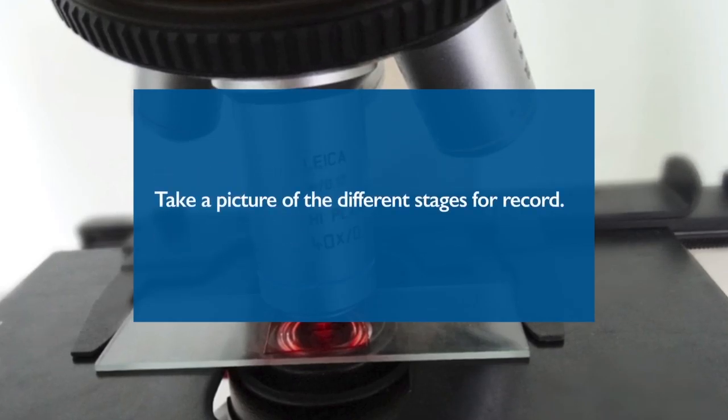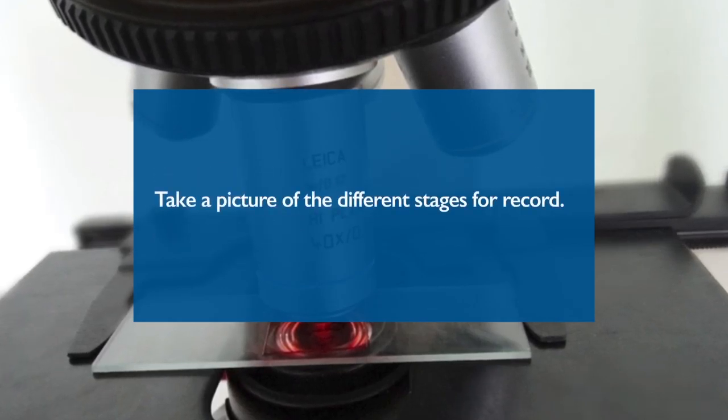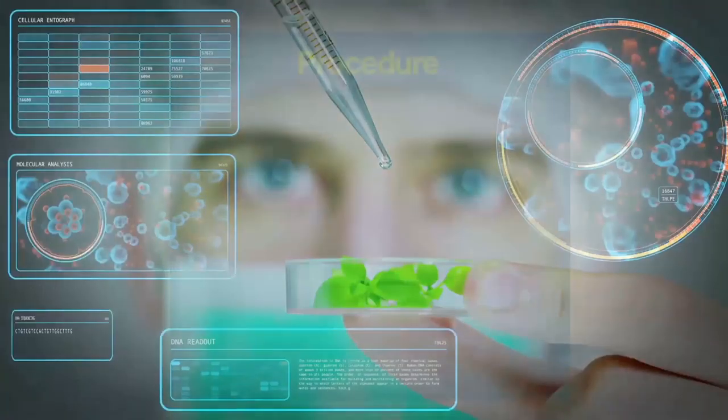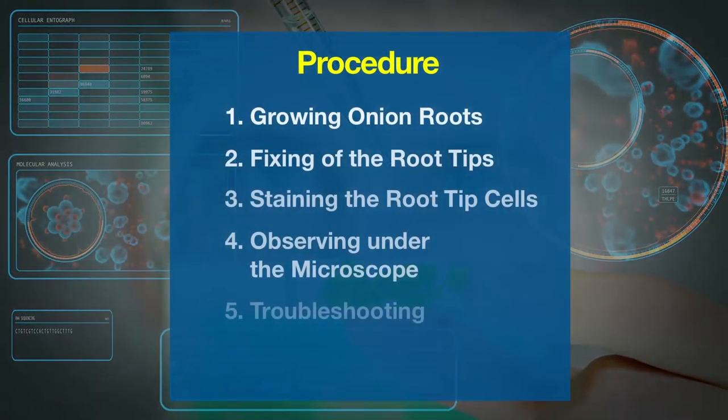Take a picture of the different stages for record. If the slide is not satisfactory and the stages of division are not clearly visible, repeat the above procedures.